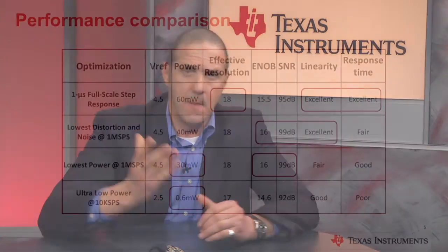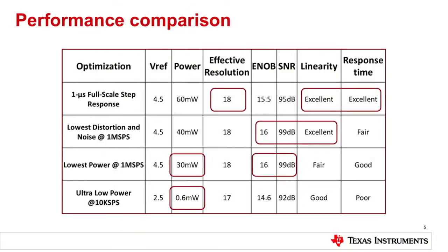In terms of performance comparison — and this is really what comes in handy for understanding the trade-offs — if you target the 1-microsecond step response, your effective number of bits is about 18. That's your effective resolution. Your ENOB is about 15.5, so not outstanding. Your SNR is somewhere around 95 dB or so.